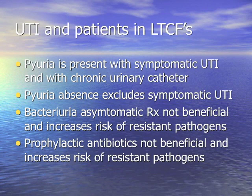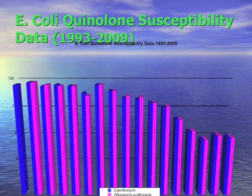Remember: pyuria is present when you have a symptomatic UTI with a chronic urinary tract infection. Pyuria absence is very important — it excludes symptomatic UTI. The absence rules it out, but the presence doesn't guarantee it. Asymptomatic bacteriuria — treating that is not beneficial; all you do is cause resistance. Prophylactic antibiotics are also not beneficial and promote resistance.